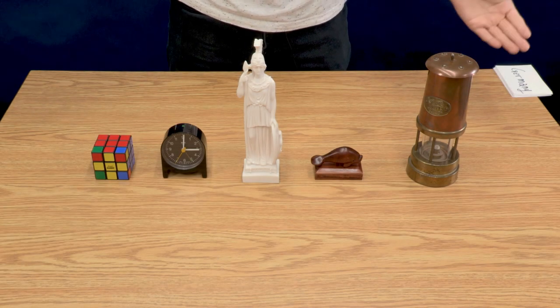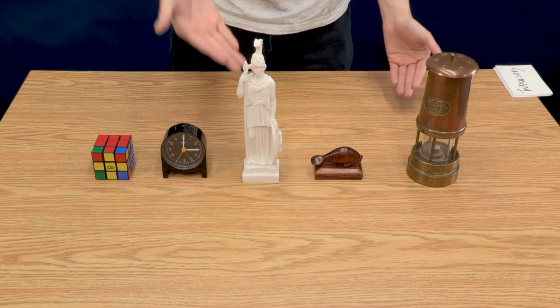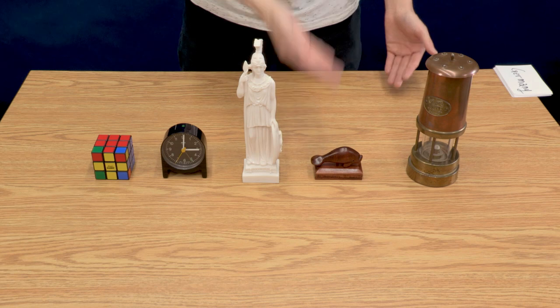Now I have here these five trinkets. I have a Rubik's cube, a clock, a statue, a manatee, and a lamp.